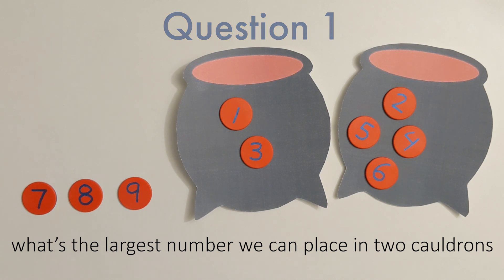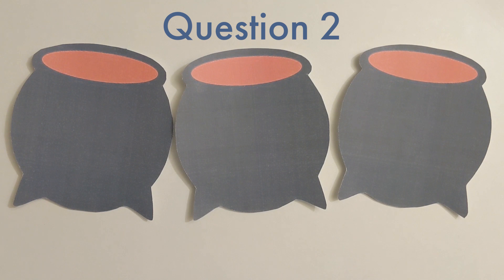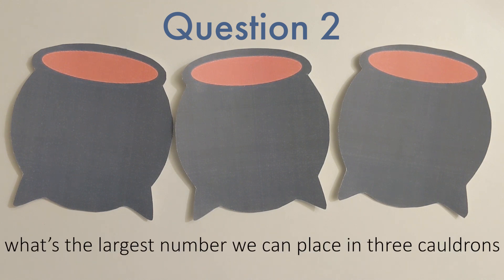Now for our second question, we're going to need to add another cauldron. Using 3 cauldrons, and starting from the number 1, what's the largest number we can place so that none of the 3 cauldrons explode?